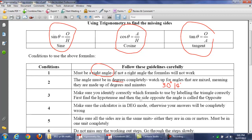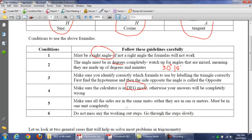Also, make sure that you label the triangle correctly. You have to find the hypotenuse first, then the side opposite the angle. Make sure your calculator is in degree mode. Otherwise, your answers will be wrong. And of course, make sure that all the sides are in the same units.